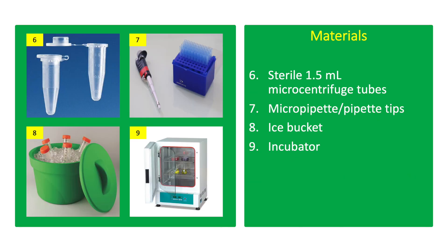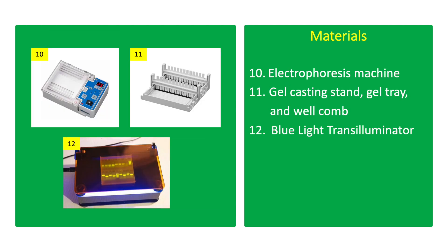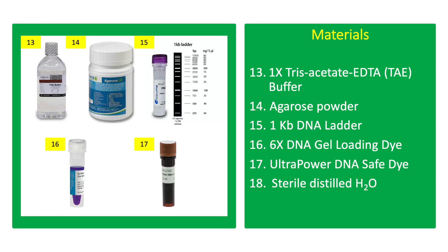Additional materials include 0.1% bovine serum albumin, sterile 1.5 ml microcentrifuge tubes, micropipettes and pipette tips, ice bucket, incubator, gel electrophoresis machine, gel casting stand, gel tray and well comb, blue light transilluminator, 1X TAE buffer, 1 KB DNA ladder, 6X DNA gel loading dye, Ultra Power DNA safe dye, and sterile distilled water.